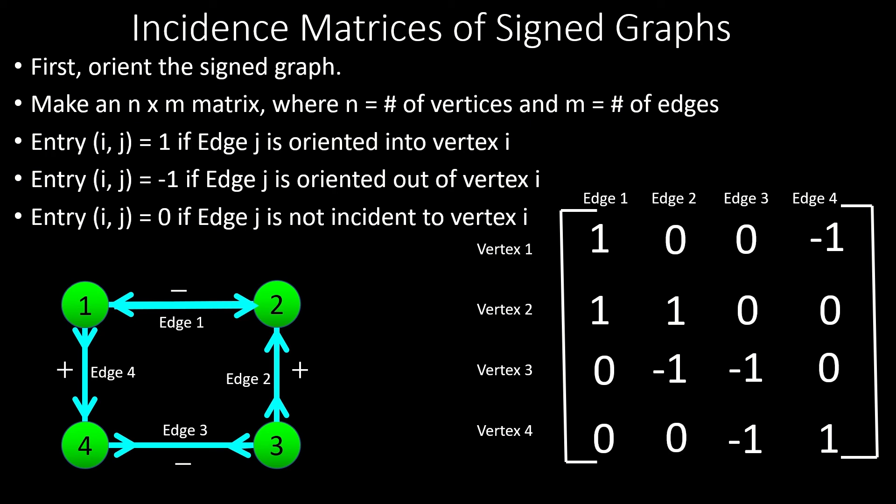In a signed graph, edges are always incident to exactly two vertices. So there are only two non-zero entries per column of our matrix. And if a column represents a positive edge, the sum of the entries in the column is 0. And if a column represents a negative edge, the sum of the entries in that column is either 2 or negative 2. Think back to the possible orientations of positive and negative edges to see why this is the case.